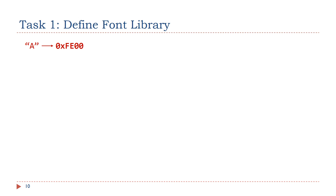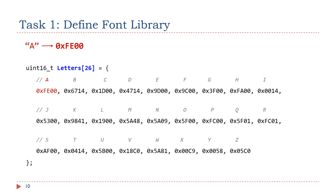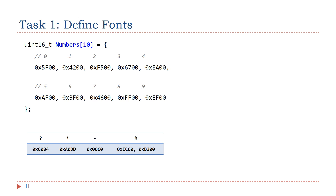In the previous example, we encoded the font of letter A as FE00 in hex. Similarly, we can find the font for the remaining capital letters and put the fonts into an array called the font library. We can also find the fonts for numbers as well as a few special symbols that can be displayed on the 16-segment LCD, such as question mark, star, dash, and percentage sign.